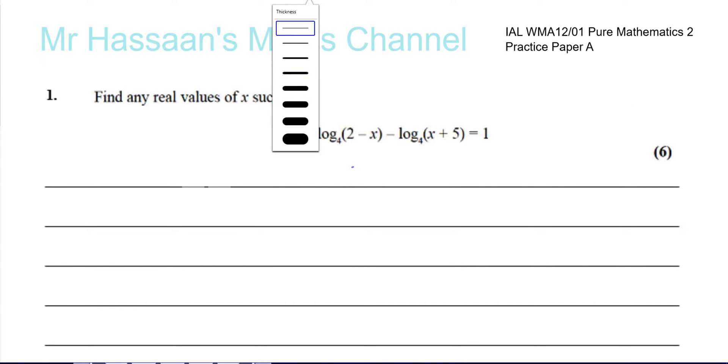We're asked here to find any real values of x such that 2 log to the base 4 of (2 - x) minus log to the base 4 of (x + 5) equals 1.